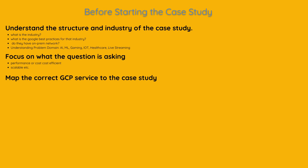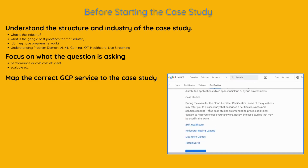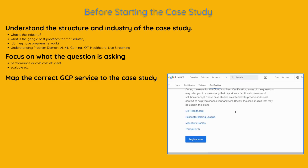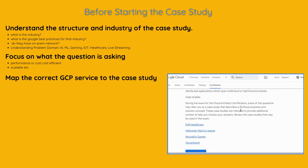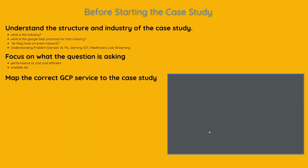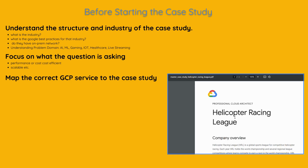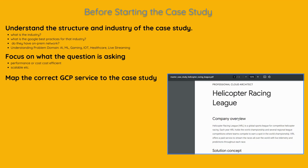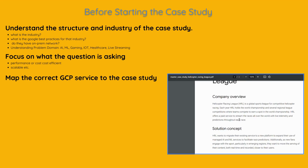After thoroughly understanding the case study, you can map the most suitable services from the Google Cloud platform for this study. You can download the Helicopter Racing League HRL case study from Google's exam link — you can find the link in the description as well. Let's start with reading the company overview.